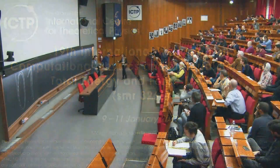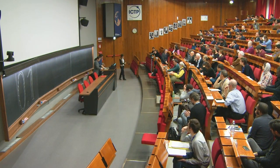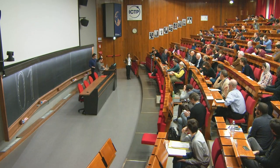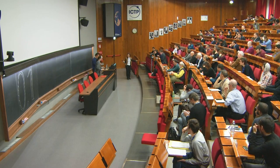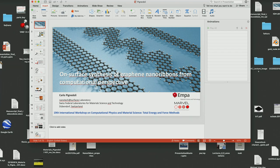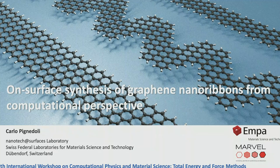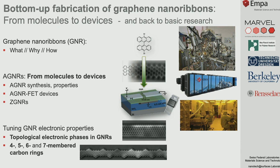I'm presenting the work we do at EMPA in our laboratory. I work in a small computational group led by Daniele Passerone, which is embedded in an experimental laboratory also led by Daniele Passerone. One of the core activities of this laboratory—where simulations run in parallel to experiment—is the fabrication of carbon-based one-dimensional nanomaterials, starting from molecules up to atomically precise graphene nanoribbons.